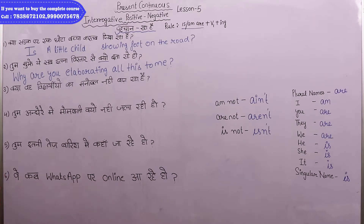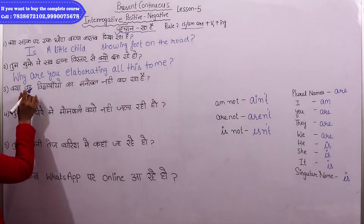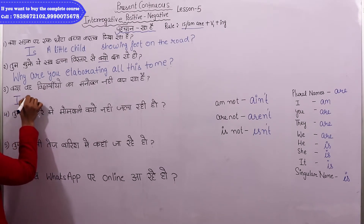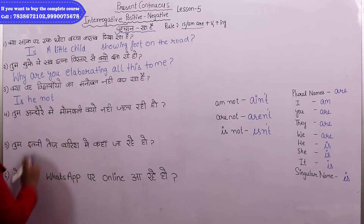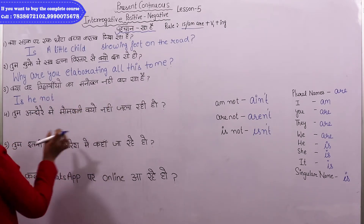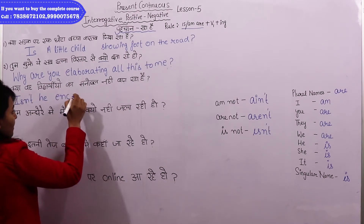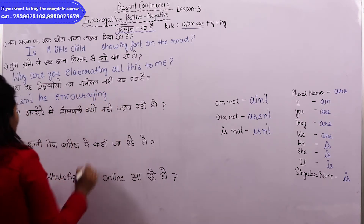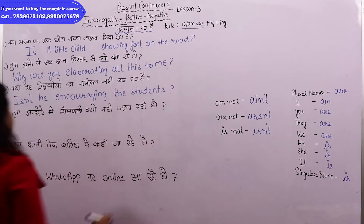Sentence number three: 'Kya vahe vidyarthiyon ka manobal nahi bada raha hai?' This is about 'vahe' — 'he'. With 'he', the helping verb is 'is'. Since it is a negative sentence, we write 'is not' together as 'isn't'. 'Manobal badaana' means 'to encourage'. So the sentence becomes: 'Isn't he encouraging the students?'